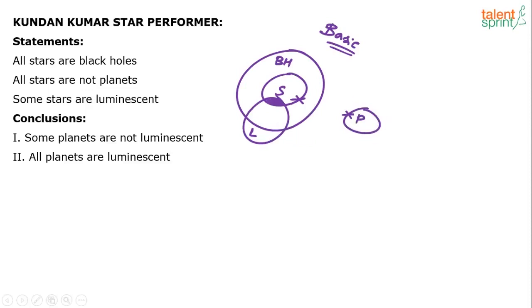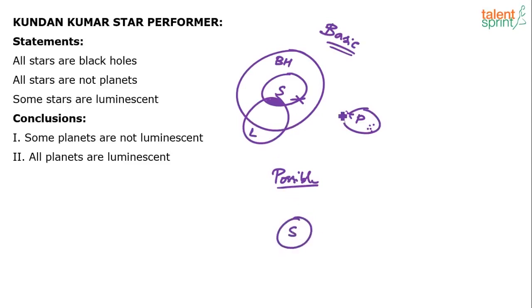Actually all the planets are not luminescent in the basic diagram, so some planets are not luminescent clears the basic diagram. But just because it follows the basic diagram, you cannot mark it as true — you must check all possible diagrams. The conclusions are only about planets and luminescent, so let's draw possible diagrams only by varying how planets and luminescent interact, since changes to stars and black holes don't affect these conclusions.